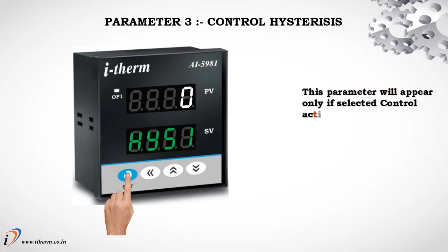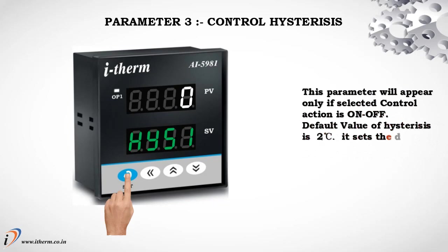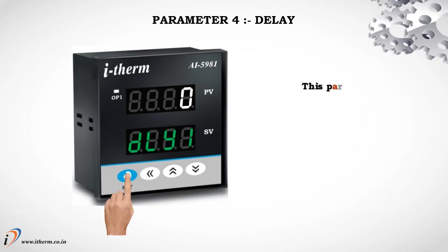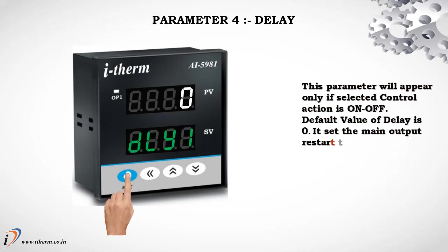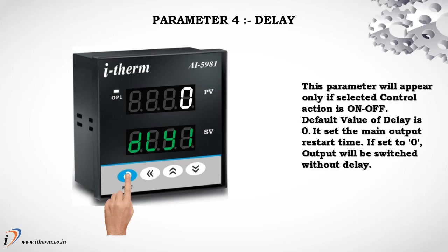Parameter 3: Control Hysteresis. This parameter will appear only if the selected control action is on-off. Default value of hysteresis is 2 degrees centigrade. It sets the dead band between on and off switching of the output. Parameter 4: Delay. This parameter will also appear only if the selected control action is on-off. Default value of delay is 0. It sets the main output restart time; if set to 0, output will switch without delay.